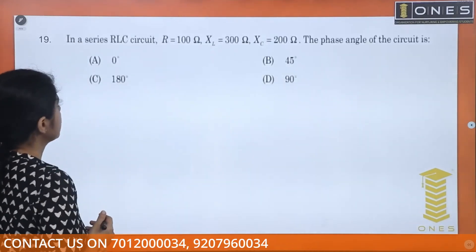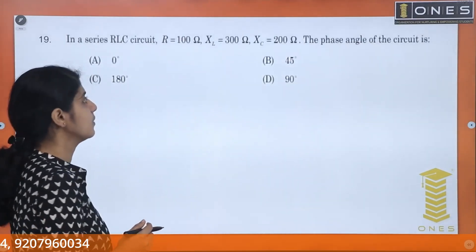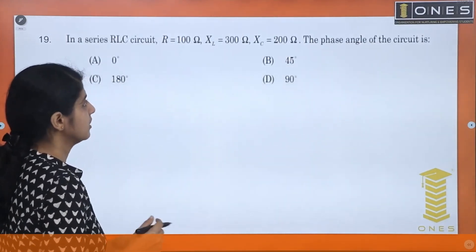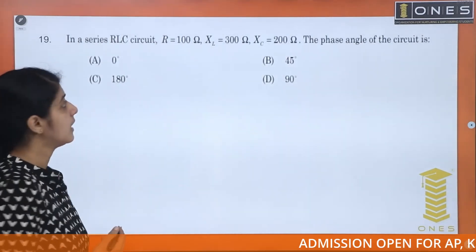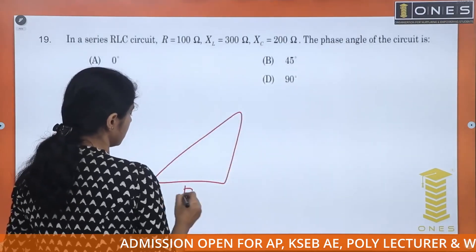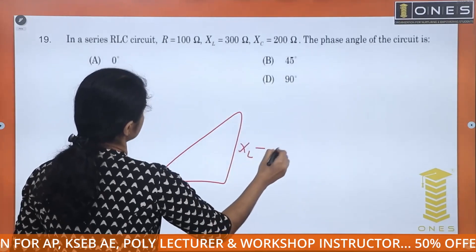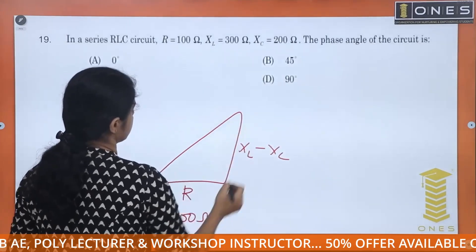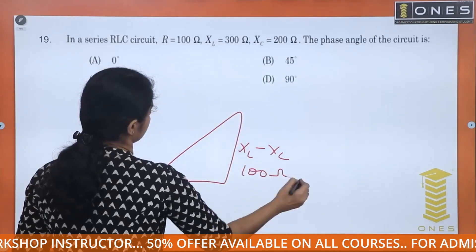In a series RLC circuit, R is equal to 100 ohm, XL is equal to 300 ohm, XC is equal to 200 ohm. The phase angle of the circuit is? XL minus XC is equal to 300 minus 200, that is 100 ohm.